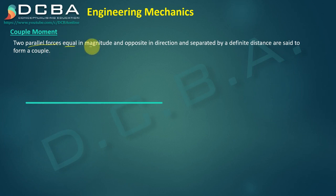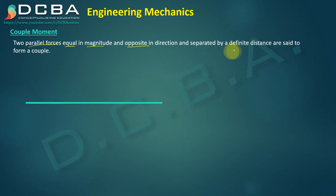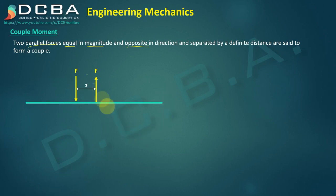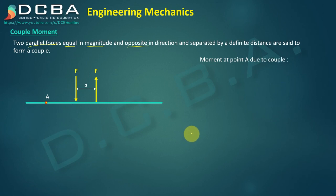They need to have equal magnitude and the direction should be opposite to each other. They are separated by a definite distance, so they are not coinciding with each other, neither are they concurrent — that is very important. The way to show a couple force is: both forces are parallel to each other, one force acting in the downward direction and one acting in the upward direction. The magnitude is the same, the directions are opposite, and they are separated by a definite distance. This is called a couple.